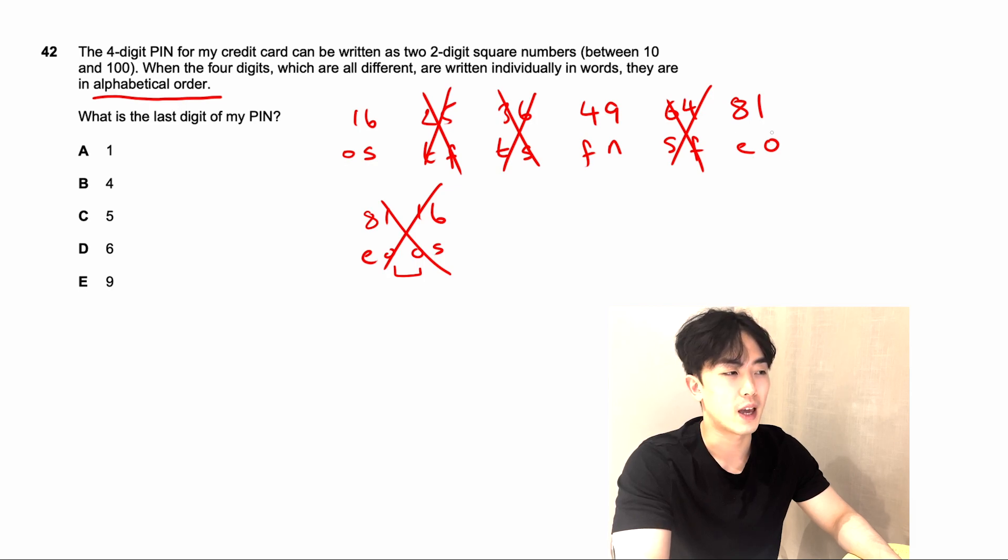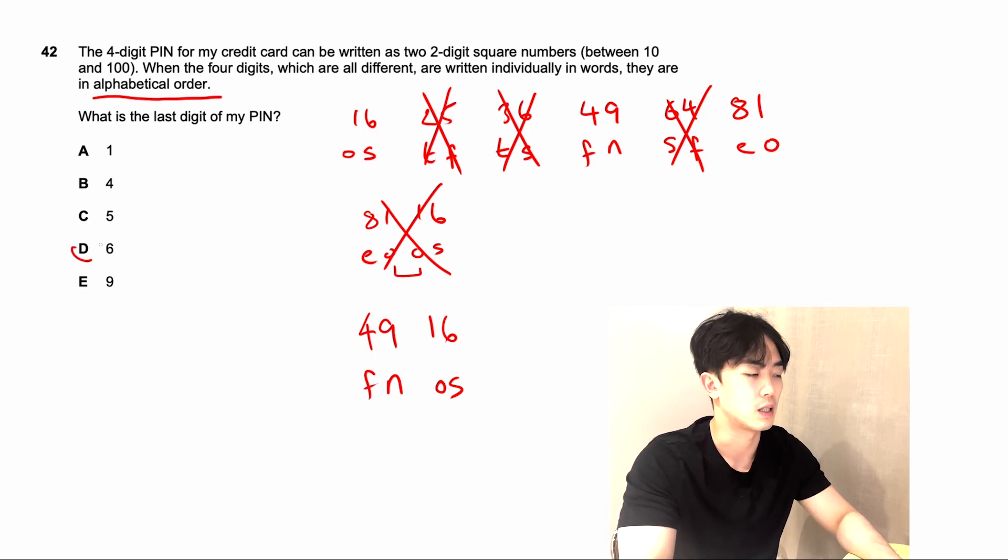So what does that mean? I can only choose one of 81 or 16 to be in my PIN number. So in that case, let's look at 49. F, N, is there any alphabet before F? Well, they all start after F. So that means 49 is going to be our first one here, F, N. And then E is before N, so it's going to have to be 16, O, S. So 4916 is going to be our PIN code. The last digit is going to be this six value here.